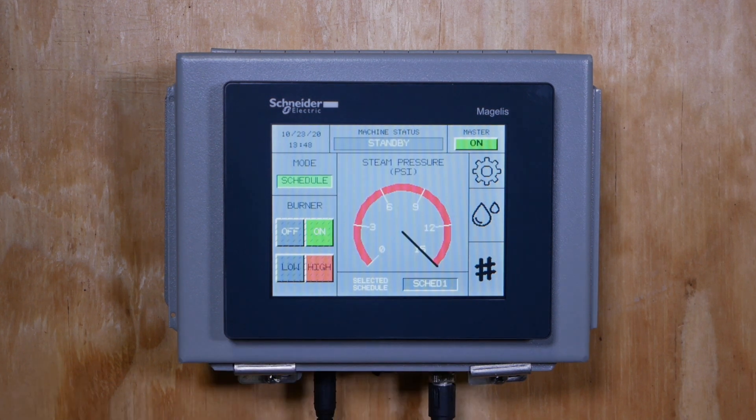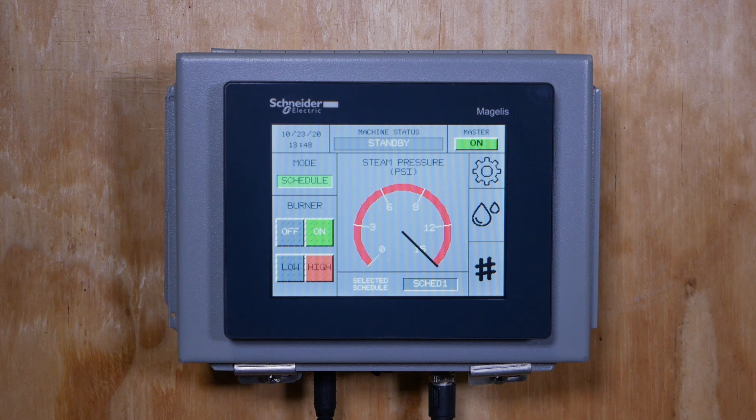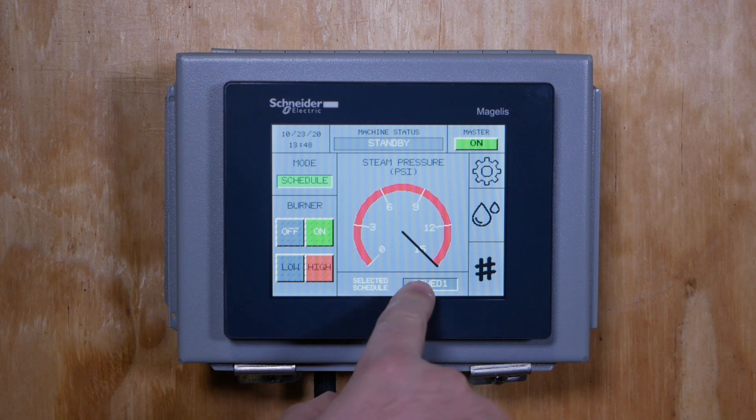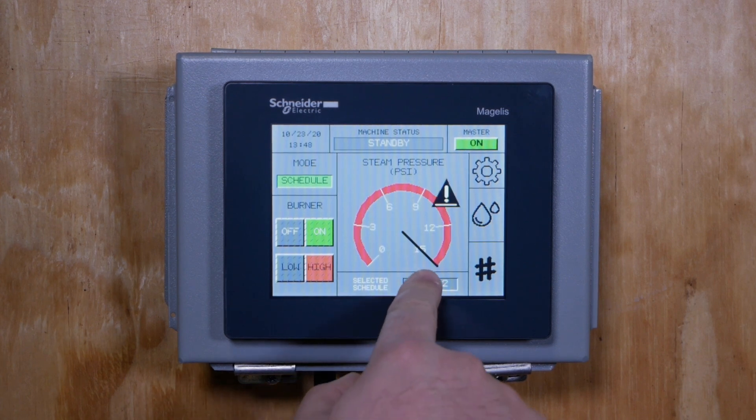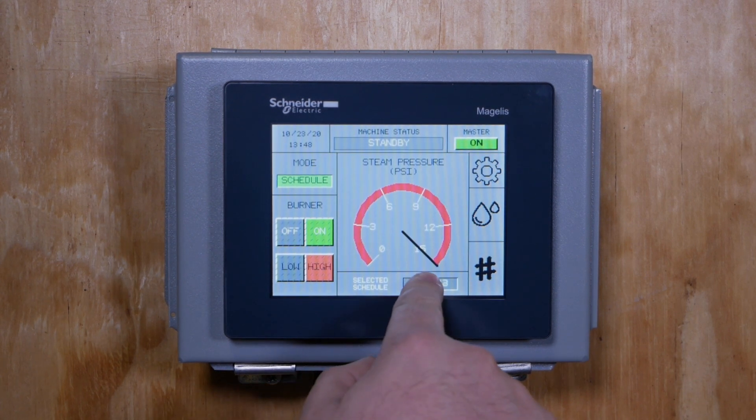Next, let's take a look at the mode section. There are three different modes you can choose. First is schedule mode. This mode allows you to set a custom operation schedule for your machine. This feature will turn the machine on and off and change the hold pressure based on your program.